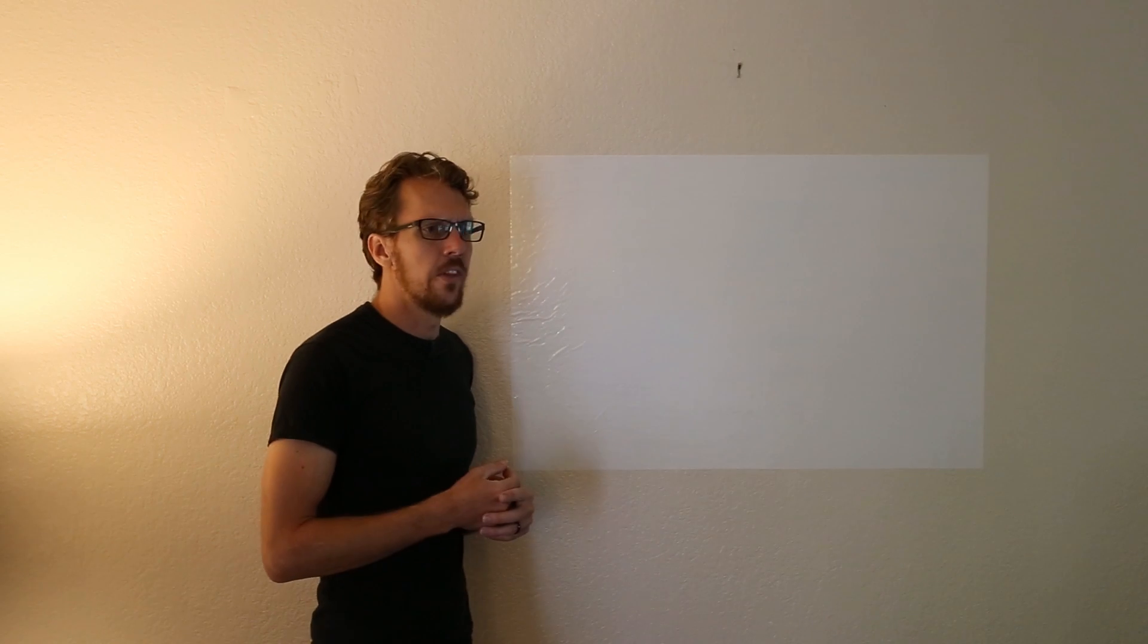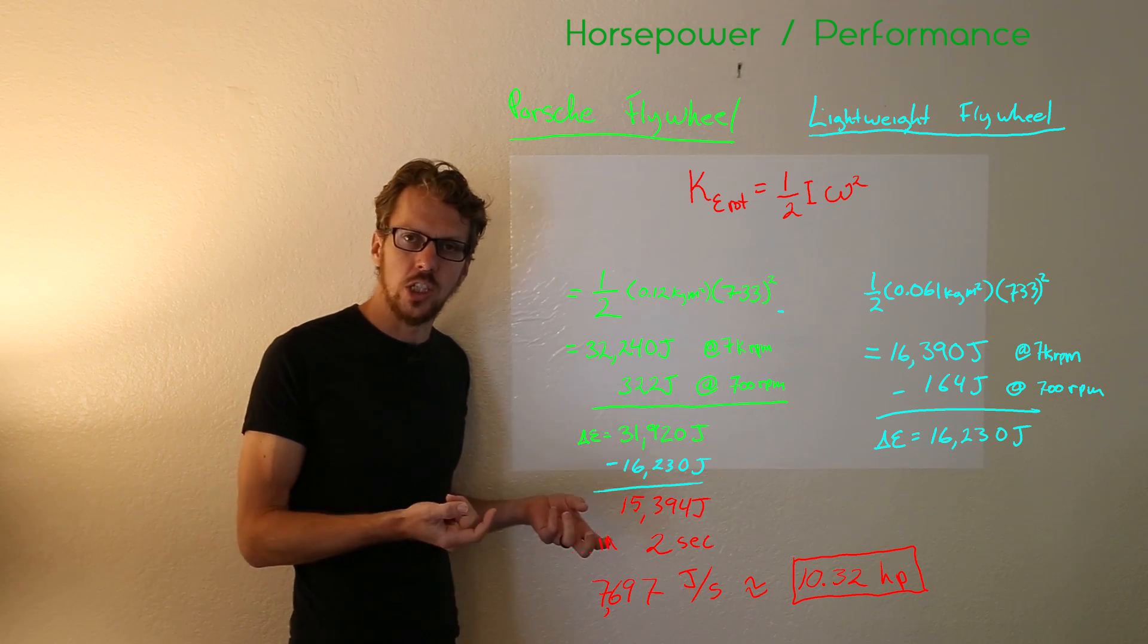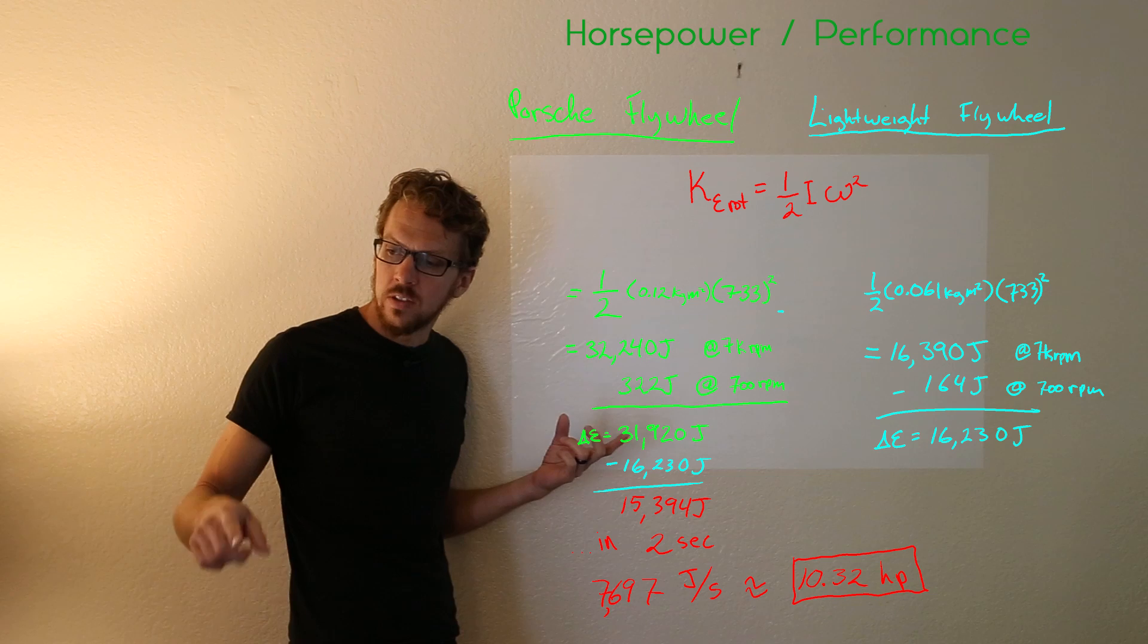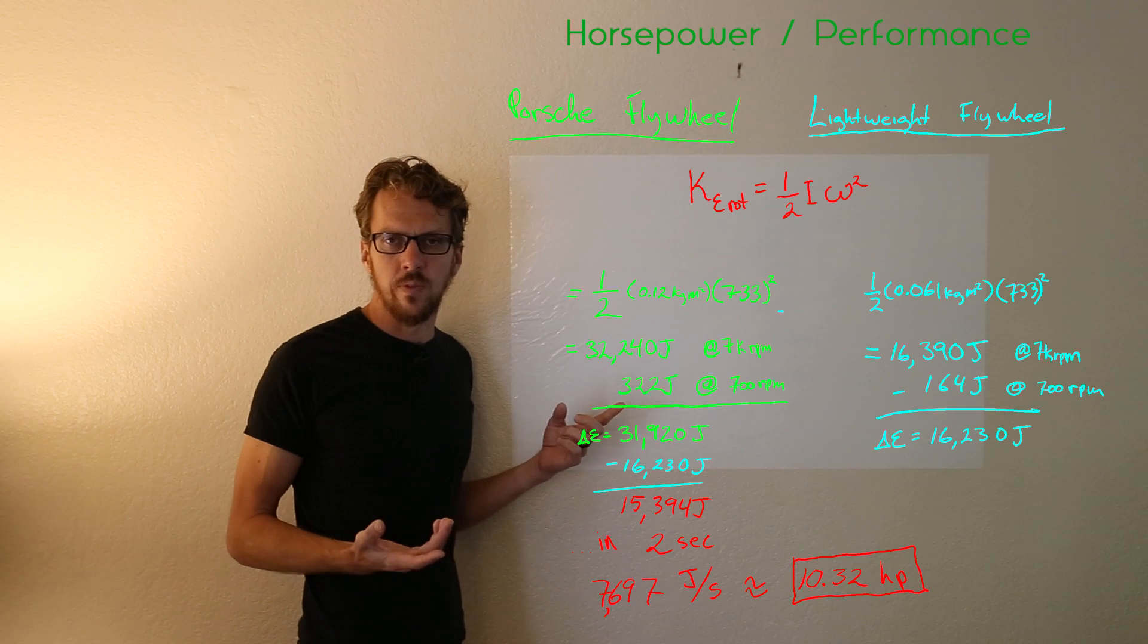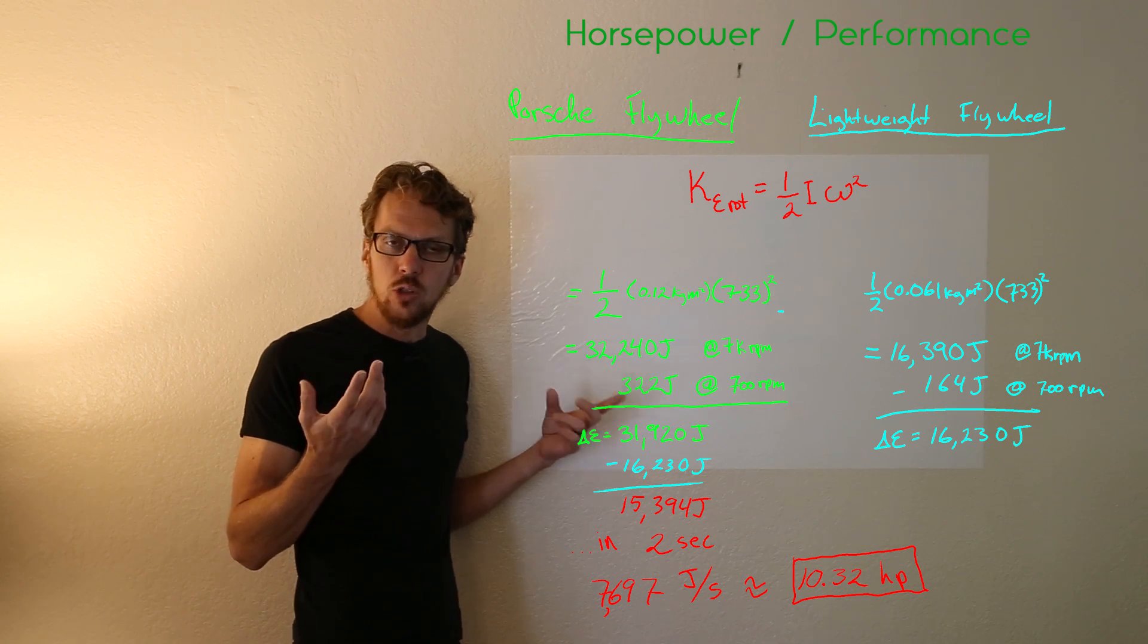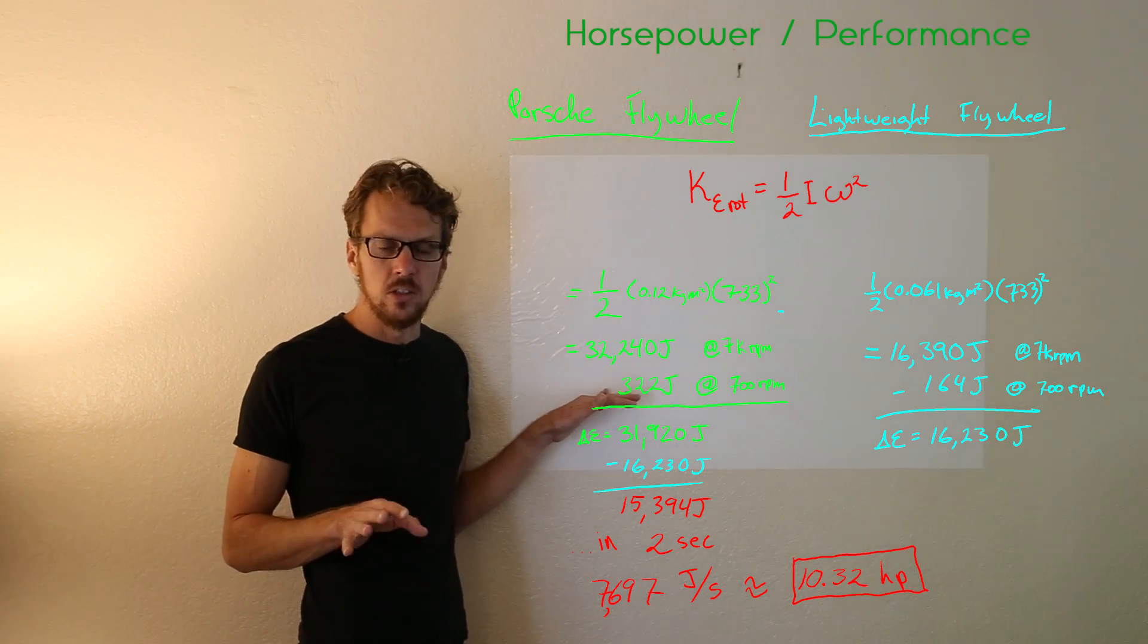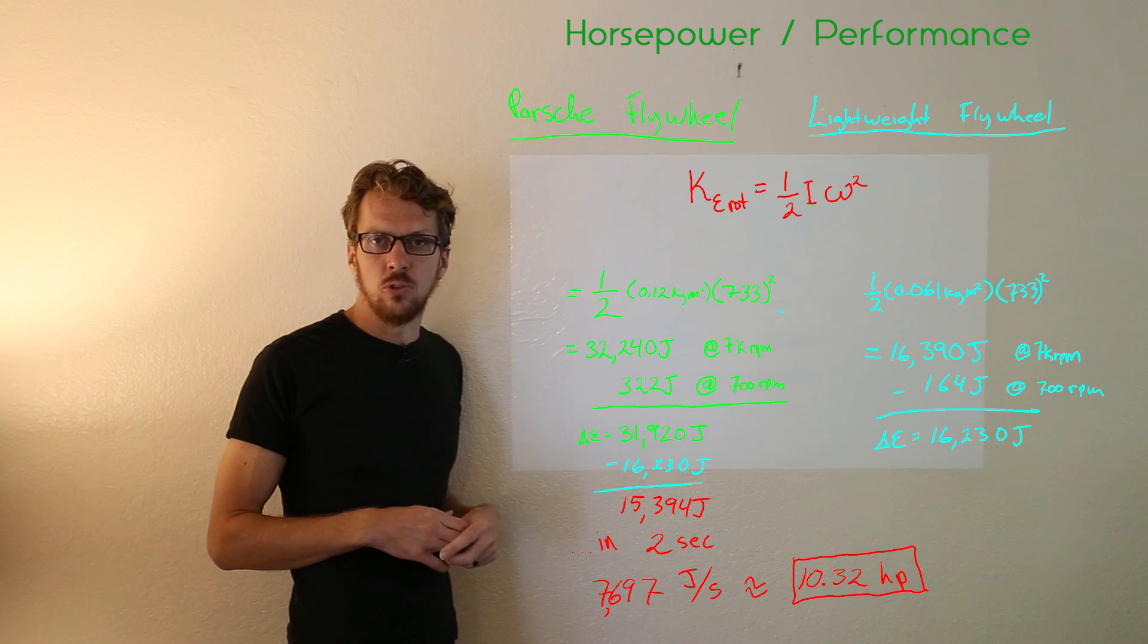All right finally for the thing that everyone cares about and this is horsepower and performance. What we can do here is we can calculate the kinetic energy in a flywheel. So we can take the Porsche flywheel and we can calculate the kinetic energy it has spinning at 7000 RPM. It turns out it has about 322 joules of energy when it's spinning at 7000 RPM. It has about 32,000 joules of kinetic energy. So to speed the Porsche flywheel up from around idle to about 7000 RPM it takes 31,000 joules of energy.